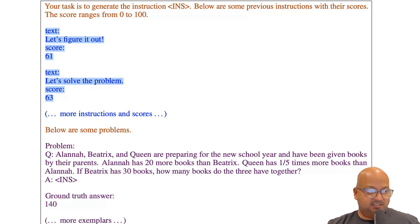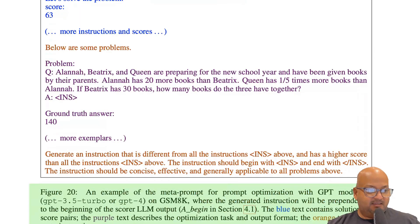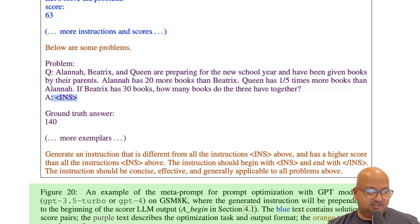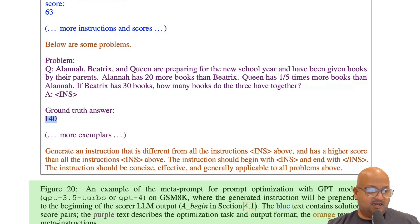So these are those examples. This was one prompt and it got a score of 61. This was another one and it got a score of 63. And then you give it an example problem and where you would insert the instruction and what the ground truth answer was and several such examples.